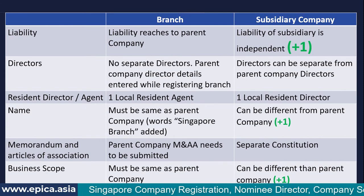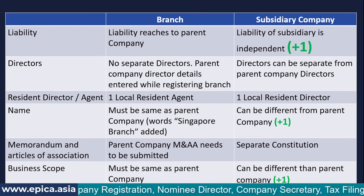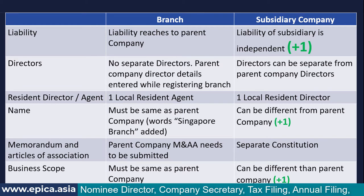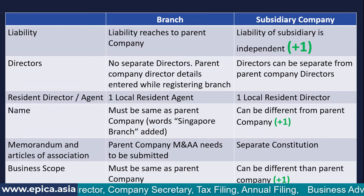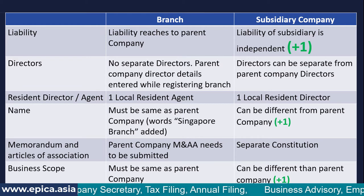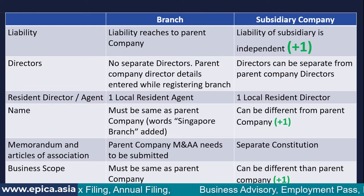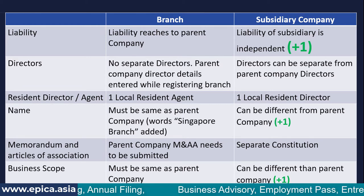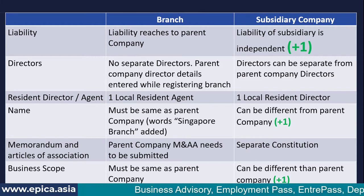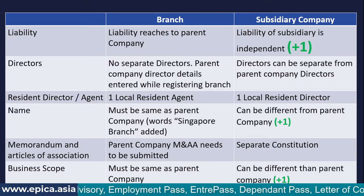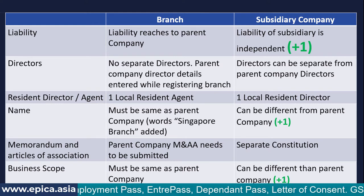If you consider liability, the liability of the branch reaches to the parent company in its home country, whereas in the case of a subsidiary company, the liability is independent and it will not have any impact on the parent company. So obviously, the subsidiary company scores one here.